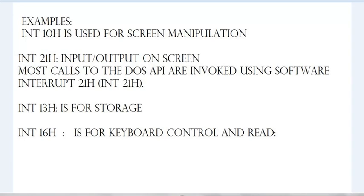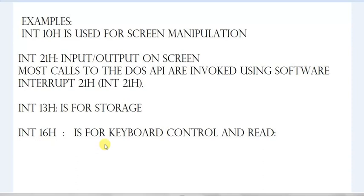Some of the most useful interrupts in assembly language coding are: INT 10H, which is used for screen manipulation functions — we will see how 10H is used for screen manipulation later in this video; INT 21H, which deals with input and output operations and most DOS API calls; INT 13H, which deals with storage — both primary and secondary storage of your device; and INT 16H, which deals with keyboard control and read operations.